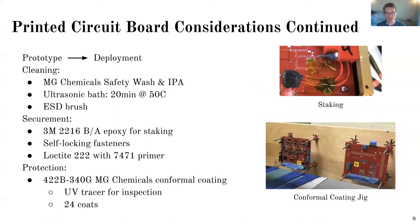So now more considerations, and this is moving from prototypes to more operation or production boards. So the first thing was cleaning the boards. So we used a combination of MG Chemicals product called safety wash and then isopropyl alcohol. So we'd use safety wash first. And since we were trying to clean out oil residue from the hands and then flux residue. So we'd use an ultrasonic bath.